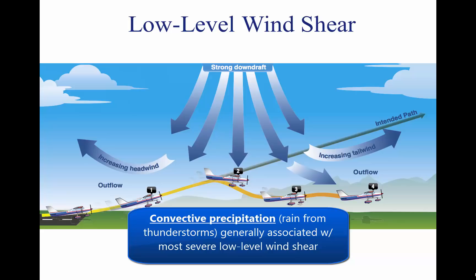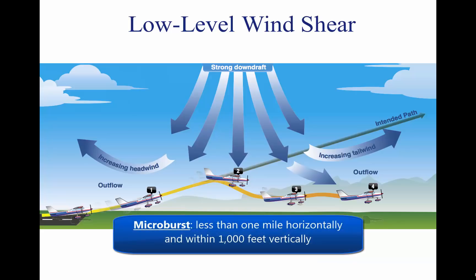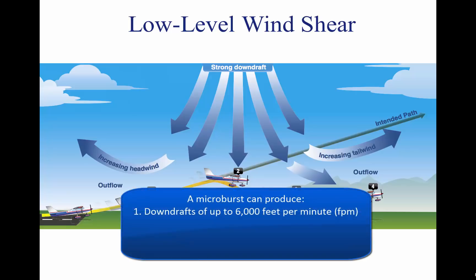One critical type of shear associated with convective precipitation is known as a microburst. A typical microburst occurs in a space of less than one mile horizontally and within 1,000 feet vertically. The lifespan of a microburst is about 15 minutes, during which it can produce downdrafts of up to 6,000 feet per minute, FPM.